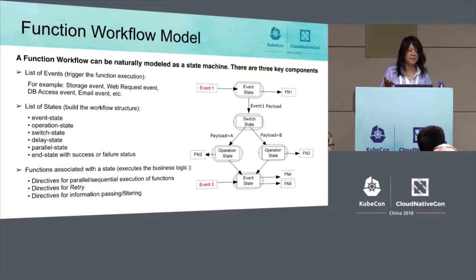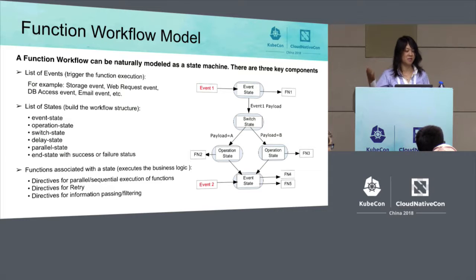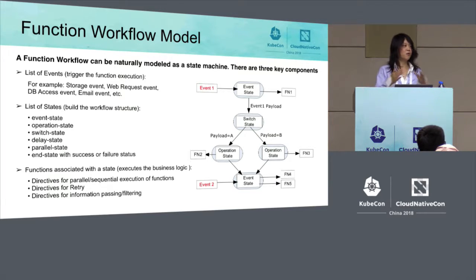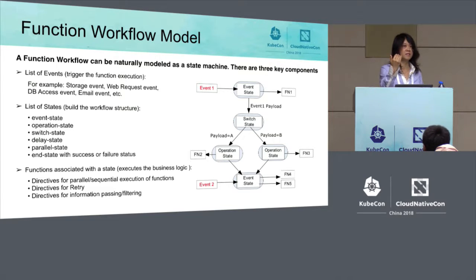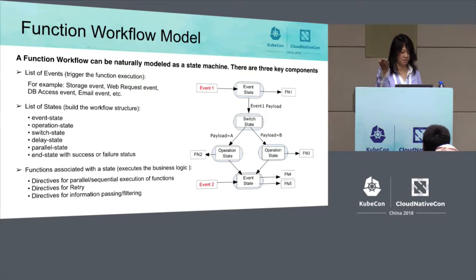The second state is an operation state. In this state, the workflow does not need to wait for any event — it will just start executing one or more functions, either in parallel or in sequence. The third state is a switch state, where the workflow will branch to different next states depending on the input parameter. The input parameter could be passed from the previous state or from the result of the previous function execution.